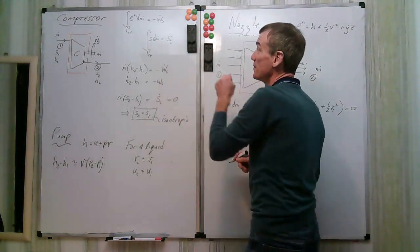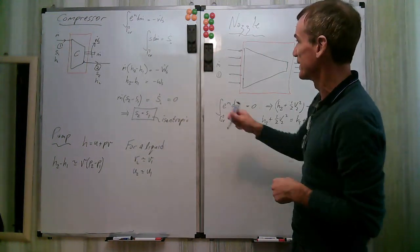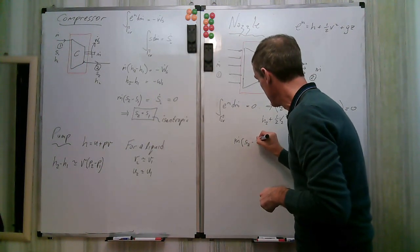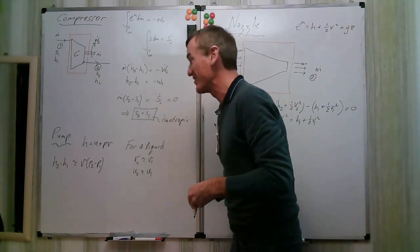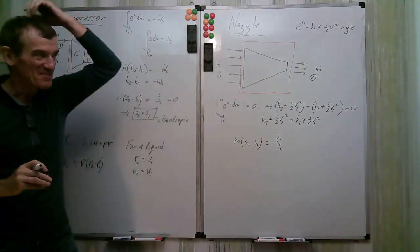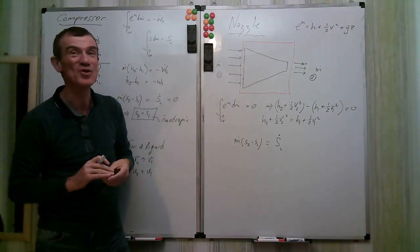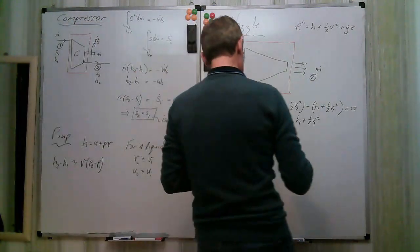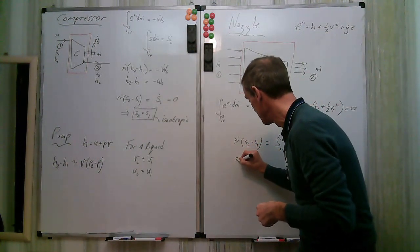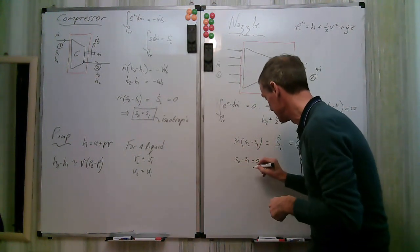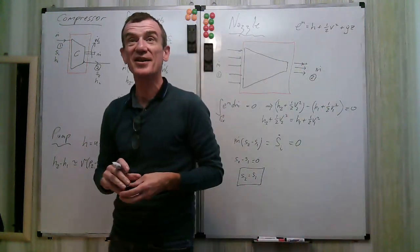Applying the entropy transport equation to the nozzle: m-dot times (s2 minus s1) equals S-i-dot. For flow through a nozzle we try to keep the flow smooth, so we can assume little entropy production, giving s2 minus s1 approximately equal to zero — isentropic — as a reasonable assumption, provided there are no shocks.